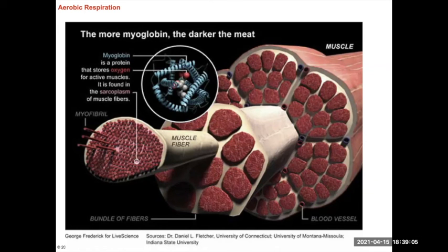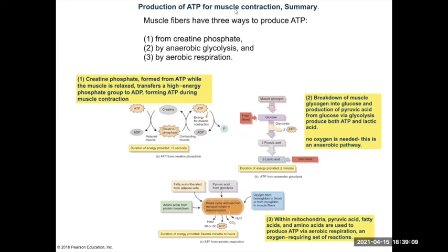So, to summarize ATP production for muscle contraction: you have creatine phosphate as immediate storage — it builds up when muscles are relaxed and donates its phosphate bond when ATP is being used up. Once that's depleted, you go into either anaerobic or aerobic respiration depending on your oxygen level. Absence of oxygen: low ATP yield, but very fast. Presence of oxygen: high ATP yield, but takes a little longer.